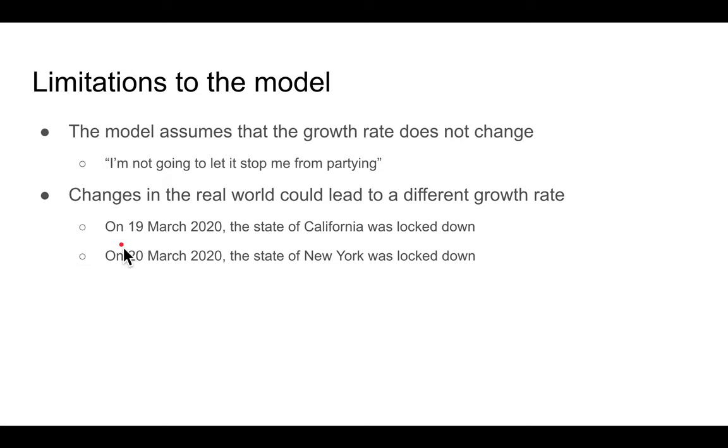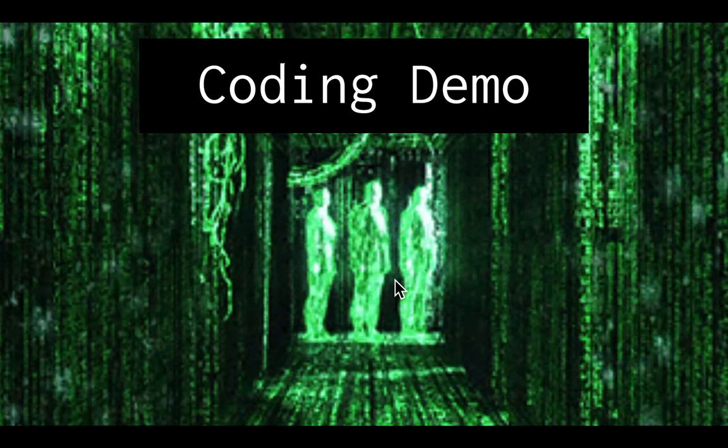So for example, many US states, such as California and New York, have now been on lockdown with residents ordered to stay at home. So the growth rate, the model that we predict, might not be so accurate, if people are vigilant in following these social distancing or lockdown orders, and reduce, and the rate growth rates of COVID-19 reduces. All right, so let's do a very quick coding demo.